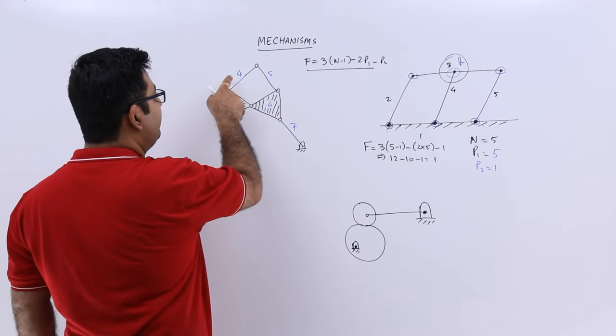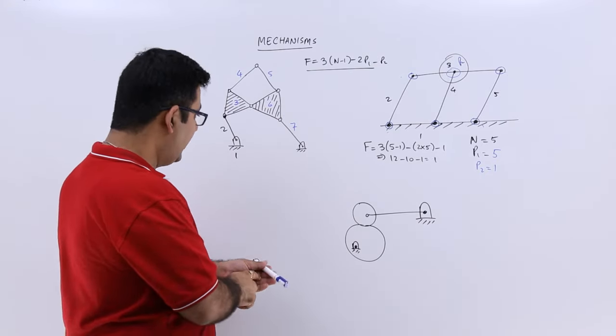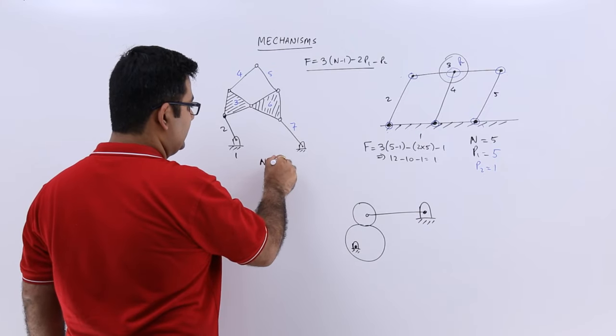So 1, 2, 3, 4, 5, 6, 7. Seven links. So I would write down capital N as 7.